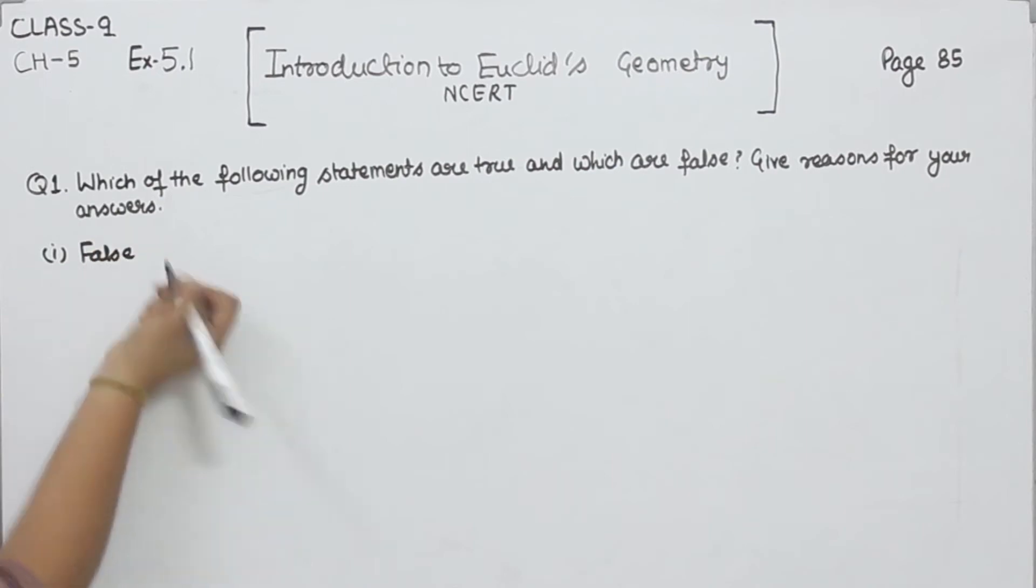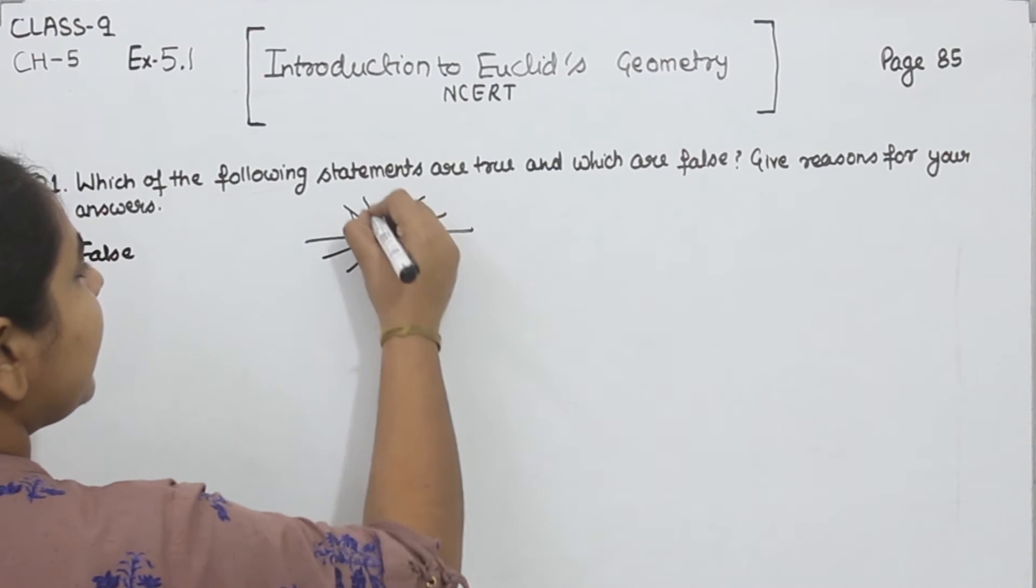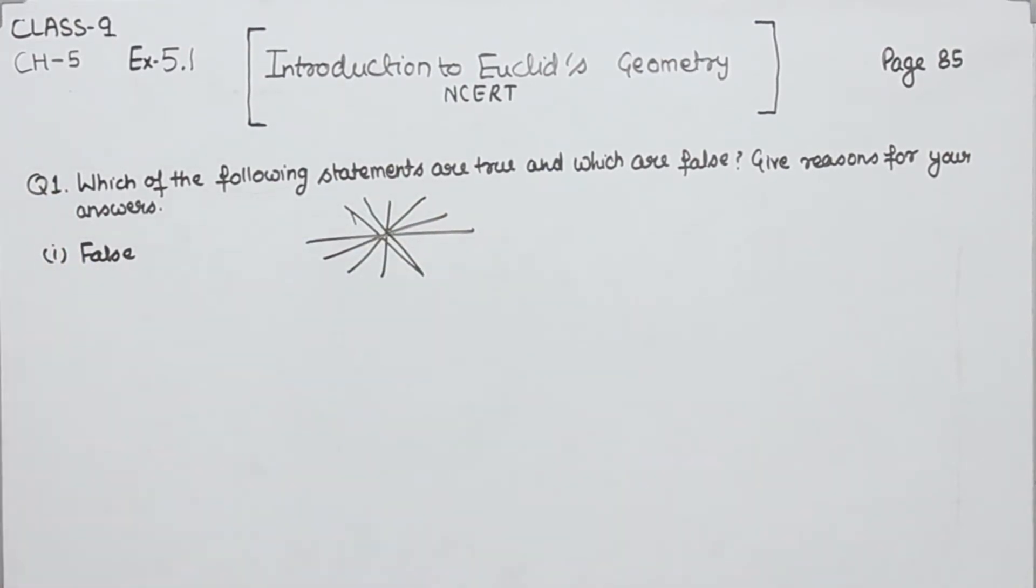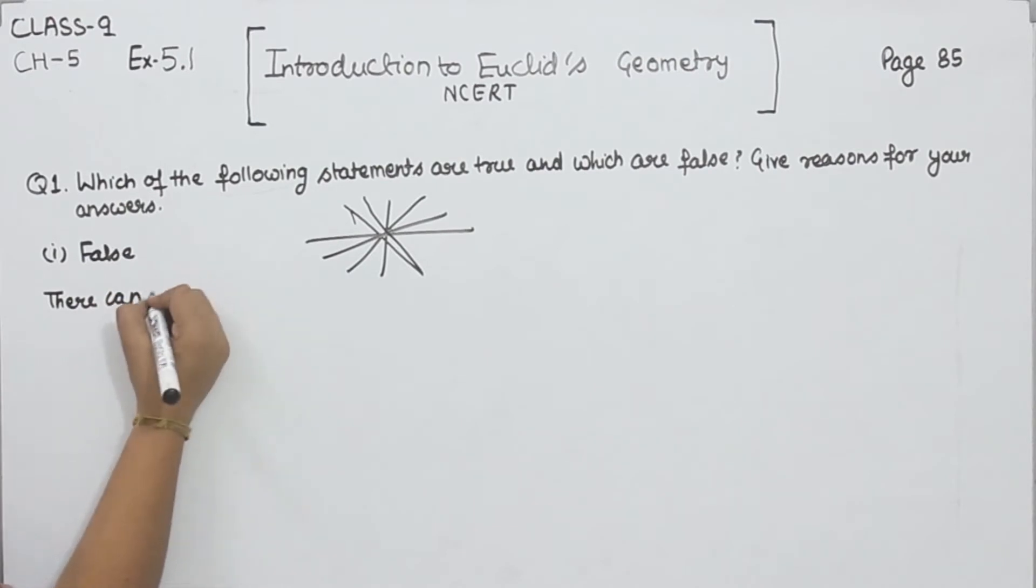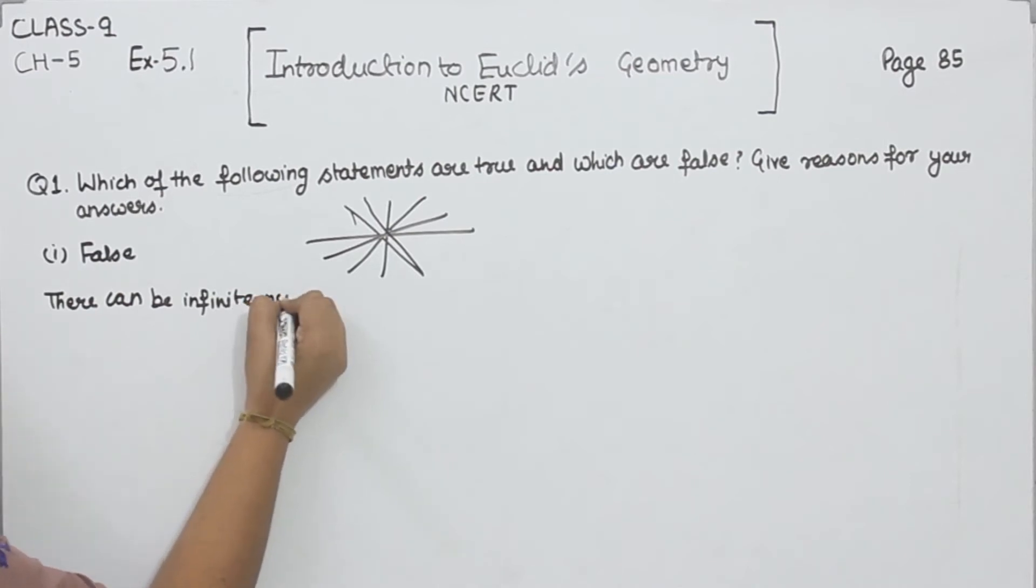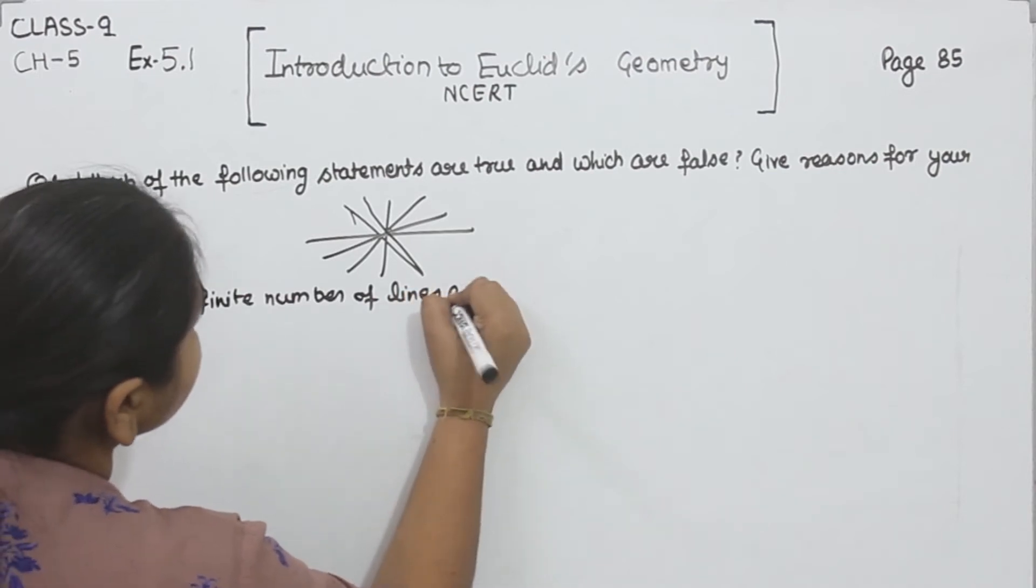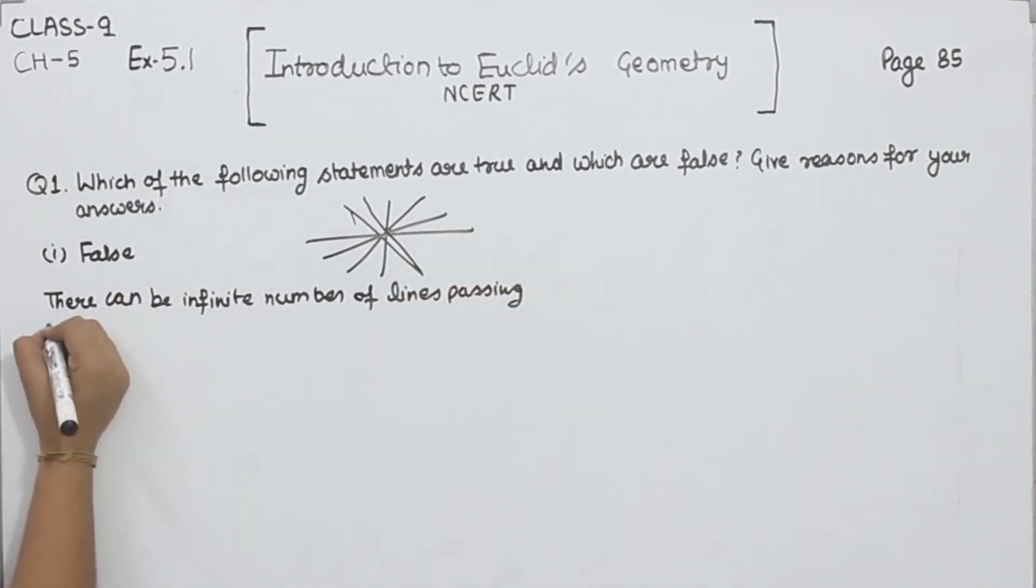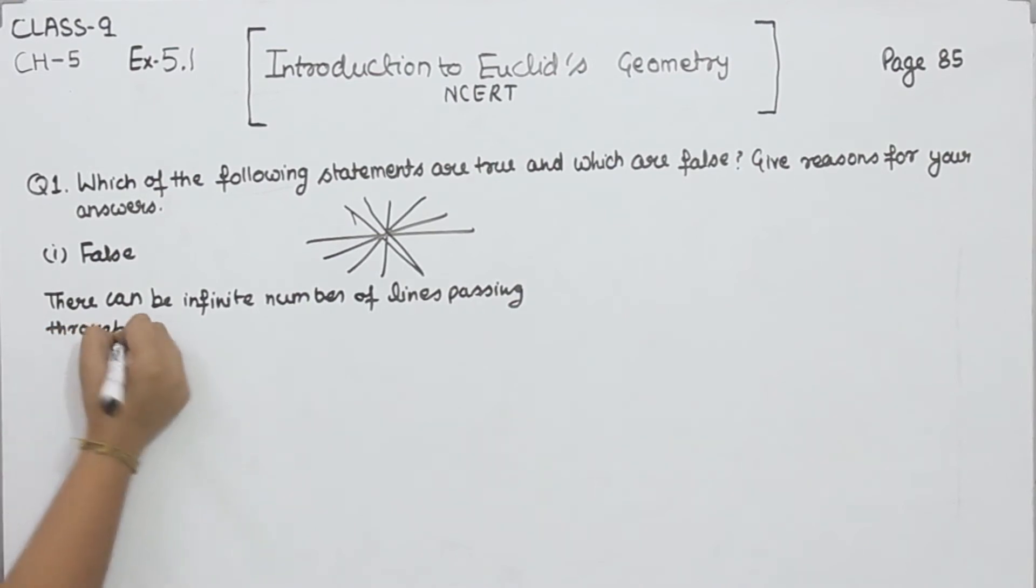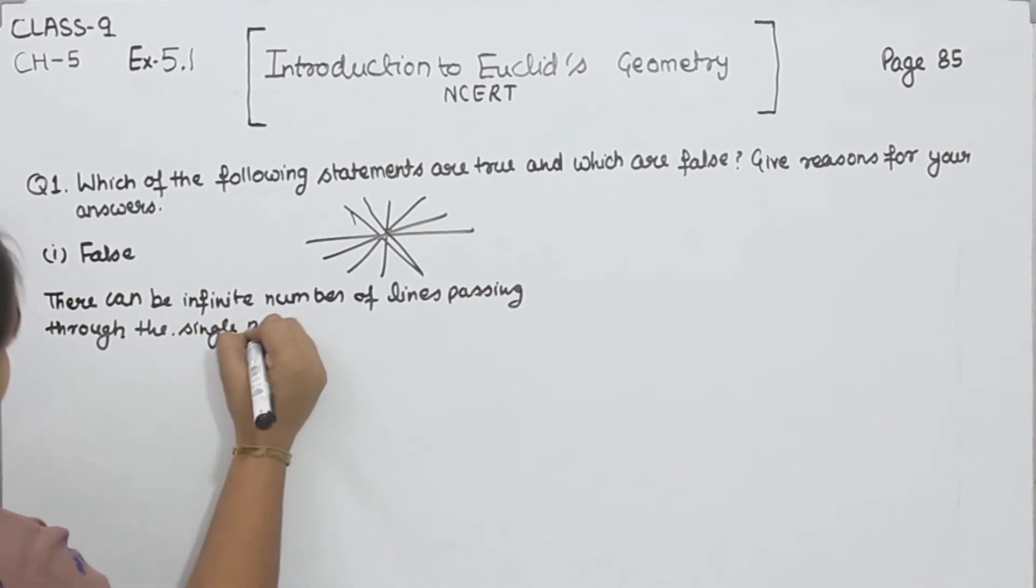From a single point, this is the point, an indefinite line can pass through this point. There can be infinite number of lines passing through this single point.